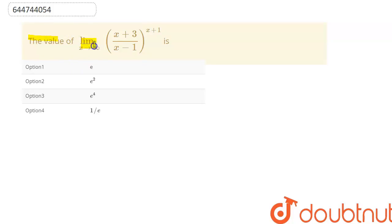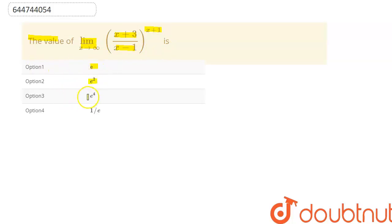Hello guys, we are given the value of limit x tends to infinity of (x+3)/(x-1) to the power (x+1). Option 1 is e, option 2 is e square, option 3 is e to the power 4, and option 4 is 1 upon e.